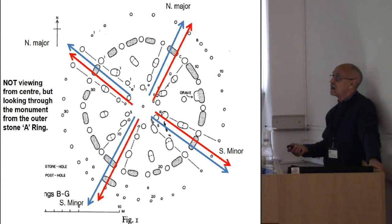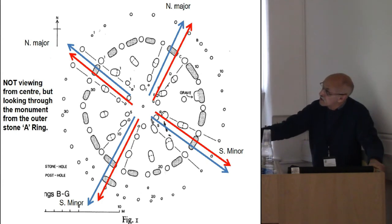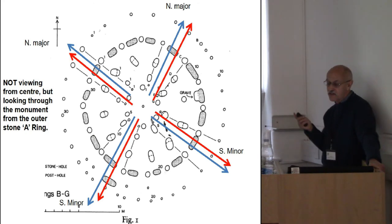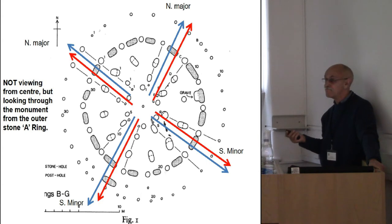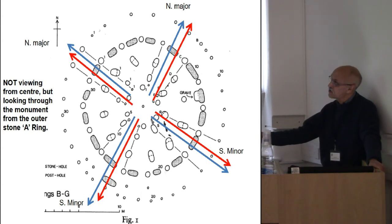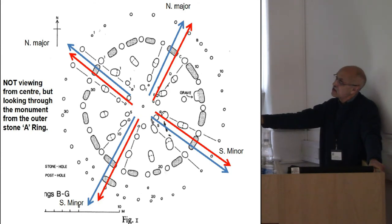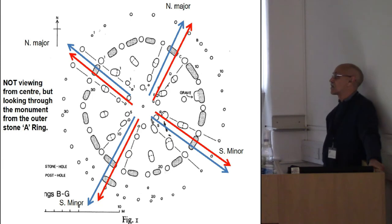When you look at the alignments through the sanctuary — these four cross-cardinal corridors, looking through the lower and upper windows through the posts — all of them are aligned on the sun and the moon. We have winter solstice sunrise, southern minor standstill moonrise, northern major standstill moonrise, summer solstice sunrise, northern major standstill setting, summer solstice setting, winter solstice sunset, and southern major standstill.